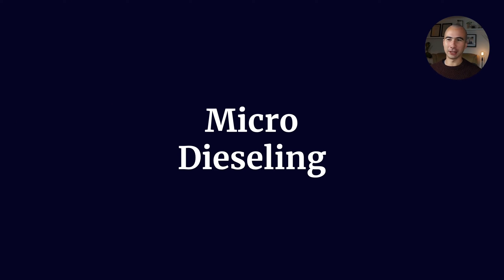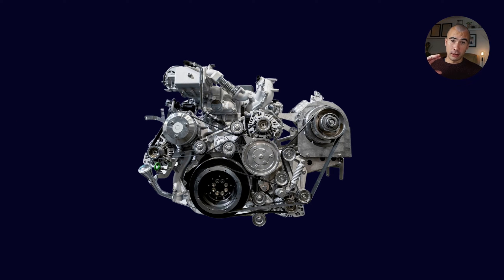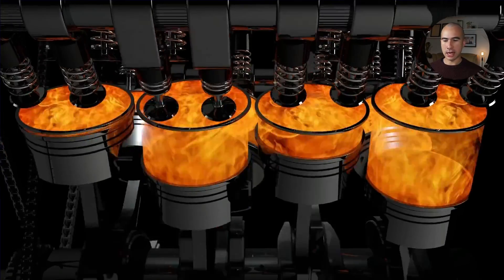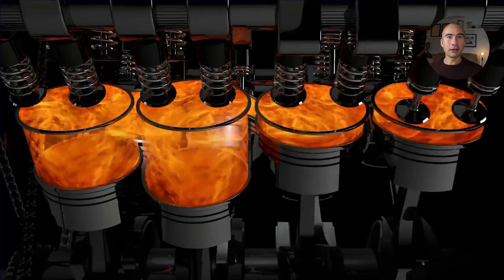All right, so let's talk about micro-dieseling of lubricants. The easiest way to understand it is to think of an actual diesel engine. This is really going to help us understand the process by which micro-dieseling happens. So the key thing about a diesel engine is of course that there is no spark.